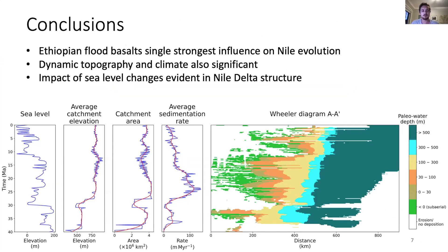In conclusion, we determined that the Ethiopian flood basalts associated with the Afar plume were perhaps the strongest single influence on the evolution of the Nile. Dynamic topography, particularly related to subduction zones north of Africa, as well as climate change — in particular the formation of the Sahara Desert — were both strong influences on the Nile River. Sea level change through time was mainly evident in the stratigraphic structure of the Nile Delta.